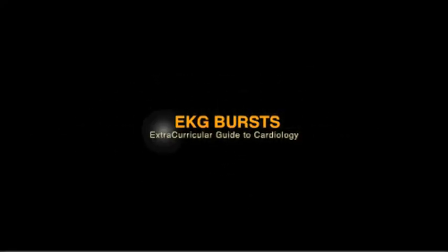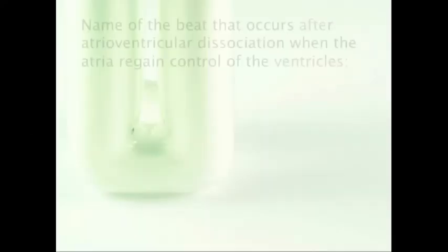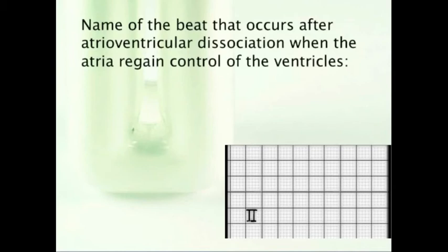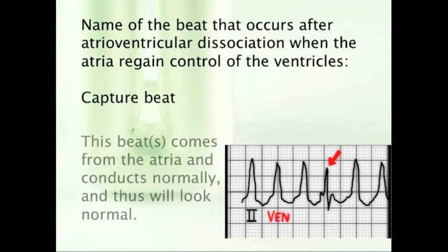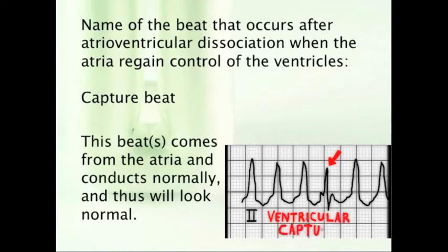EKG Burst Part 7. This type of beat occurs after atrial ventricular dissociation when the atria regain control of the ventricles. This is called the capture beat. It occurs during AV dissociation when the atria regain control of the ventricles. This beat — or sometimes beats, because you can have more than one — comes from the atria and conducts normally, and thus will look normal.